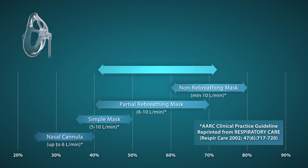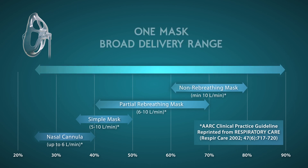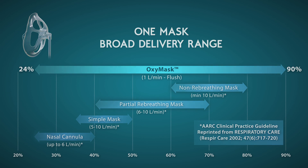With a broad range of oxygen FiO2 concentrations from 24 to 90 percent at flows ranging from 1 liter per minute to flush, OxyMask's open technology replaces traditional oxygen interfaces.